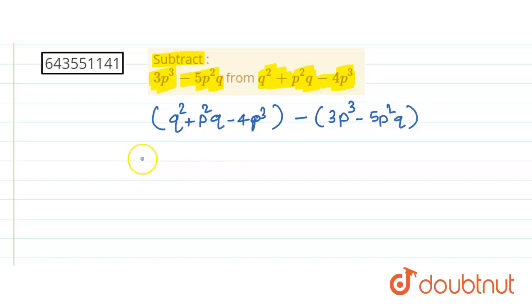Now this is equal to, if you open the brackets q2 plus p2q minus 4pq minus 3pq minus minus plus 5p2q. Just group them into the like term.